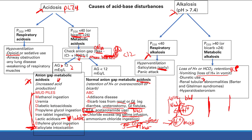For diuretics and renal tubular abnormalities: both have problems reabsorbing sodium in part of the kidney. The sodium ends up at the end of the kidney, where sodium gets reabsorbed in exchange for H+ and K+. These diuretics and tubular abnormalities prevent reabsorption earlier in the tubule, so you increase the amount of sodium at the end where this H+ exchange happens. You're excreting more H+ into the urine — you're losing all your H+, so you get a metabolic alkalosis.